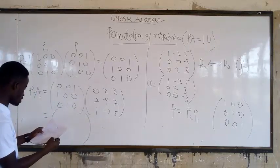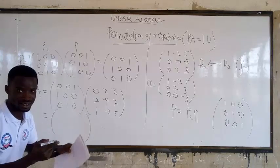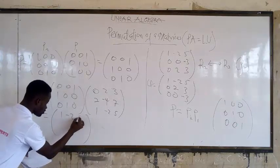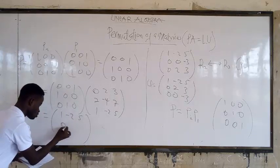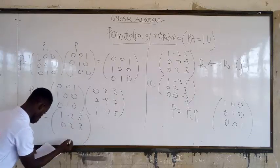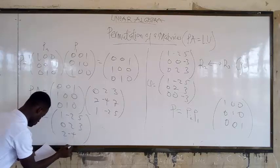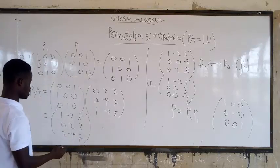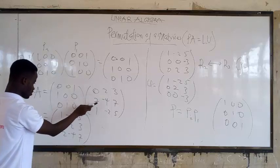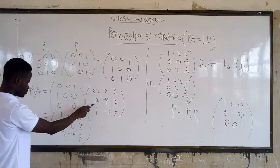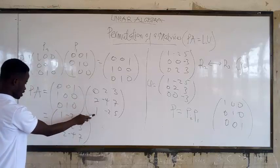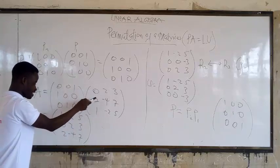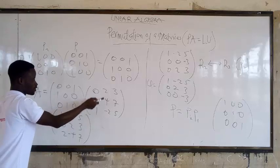The result of P×A is: row 1: 1, -2, 5; row 2: 0, 2, 3; row 3: 2, -4, 7. You can see the rows have been rearranged according to the permutation.